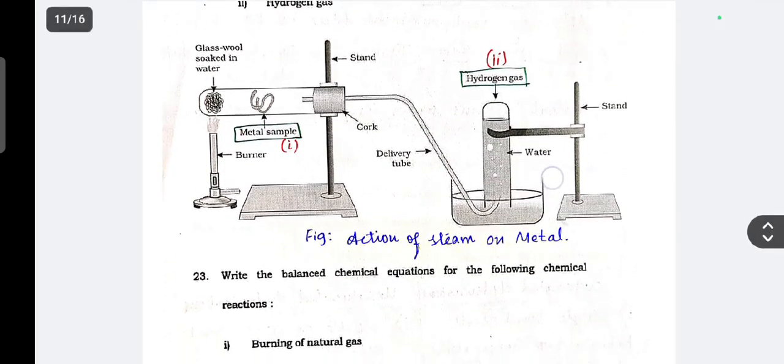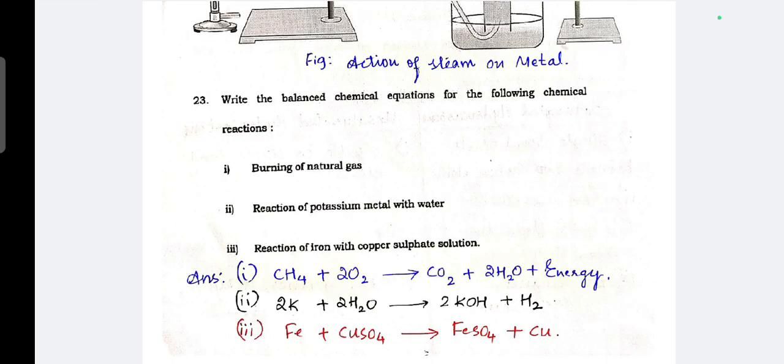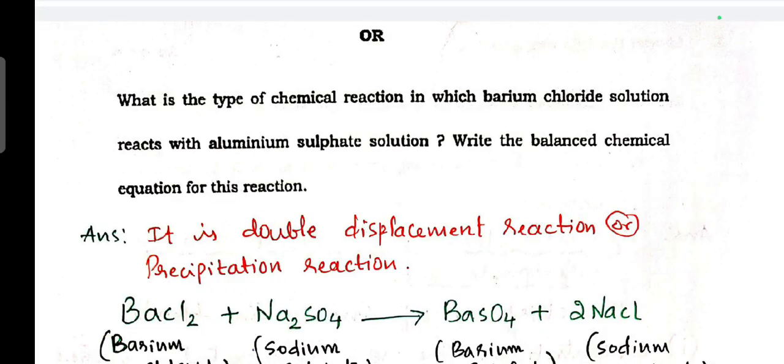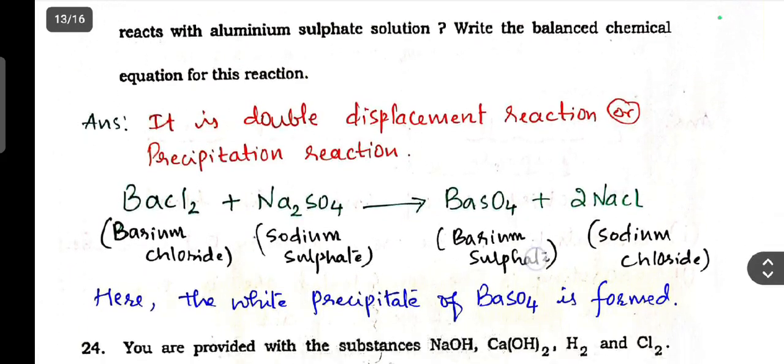Write the balanced chemical equation for the following chemical reactions: burning of natural gas, reaction of potassium metal with water, then reaction of iron with copper sulfate solution. Or what is the type of chemical reaction in which barium chloride solution reacts with aluminum sulfate solution? Write the balanced chemical equation.